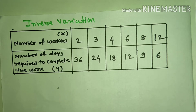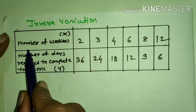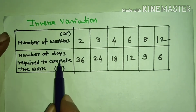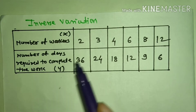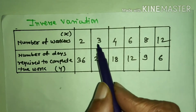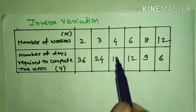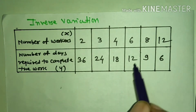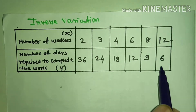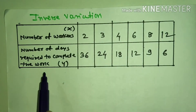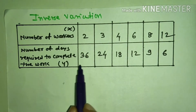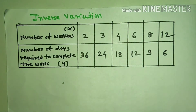Hi friends. In the last video we completed Practice 7.1 on direct variation and understood about direct variation with some examples. Now let us see inverse variation. Here, number of workers is x and number of days required to complete the work is y. For example: 2 workers take 36 days, 3 workers take 24 days, 4 workers take 18 days, 6 workers take 12 days, 8 workers take 9 days. In short, as the number of workers increases, the number of days to complete the work decreases.